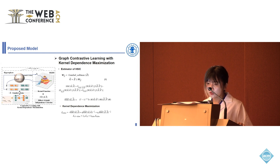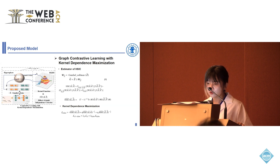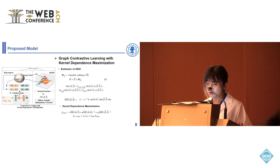We need to correctly estimate the value of HSIC, and we conduct Gumbel Softmax to variationalize Z to obtain the specific value of HSIC. Then we use kernel functions K and L to equip CLO-KDM with the ability to map representations from low-dimensional space to high-dimensional space, capturing the nonlinear properties of data. We design the kernel dependence maximization function to enhance the dependence between the same augmented representations while minimizing dependence between different augmented representations.